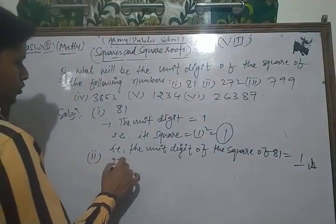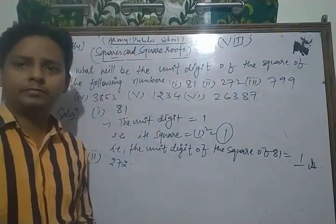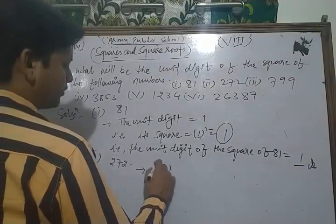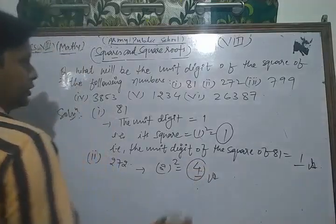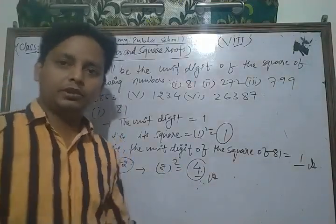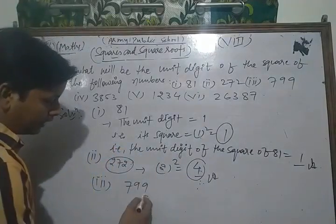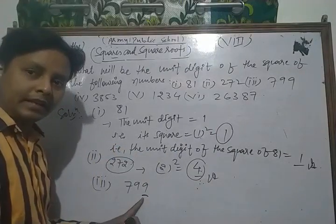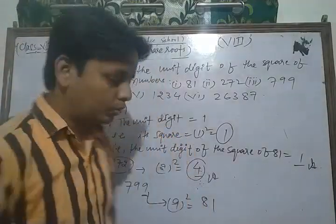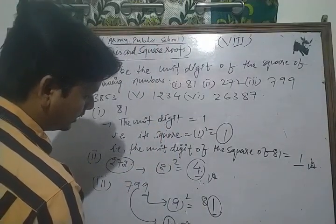Applying the same method: the second part is 272. For finding the unit digit of the square of 272, we just find the square of its unit digit. The unit digit is 2, so we find 2 squared which is 4. Thus the unit digit of the square of 272 is 4. Similarly, the third part is 799. The unit digit of 799 is 9. The square of 9 is 81, and the unit digit of 81 is 1. Thus the unit digit of the square of 799 is 1.